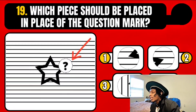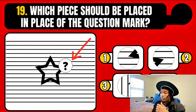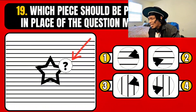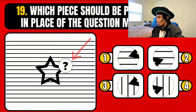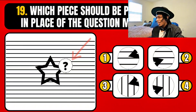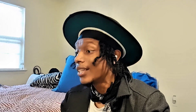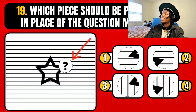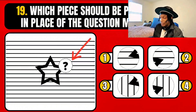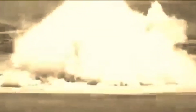Which piece can be placed in place of the question mark? Piece one, piece two, piece three, or piece four? It is quite frankly — it has to be two. No, it's four, because it is perfectly in line with the lines of longitude. Yes, it is perfectly in line.